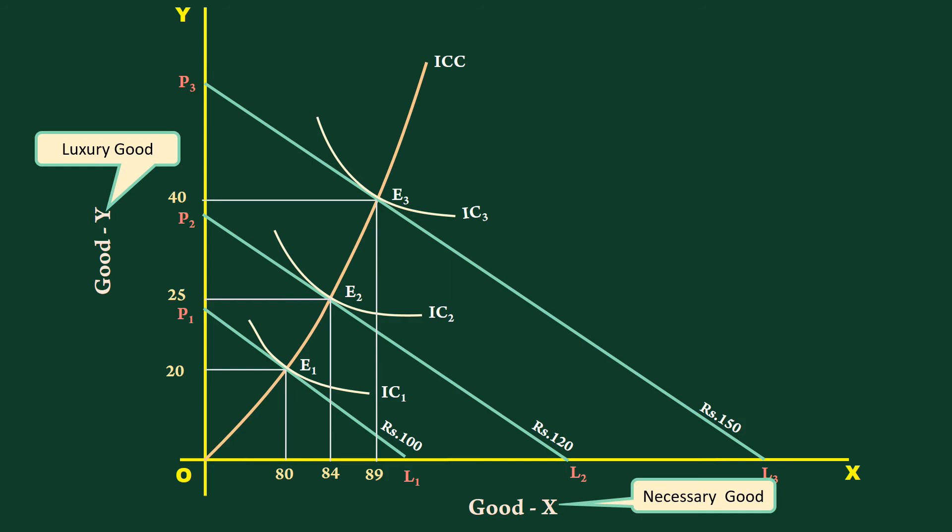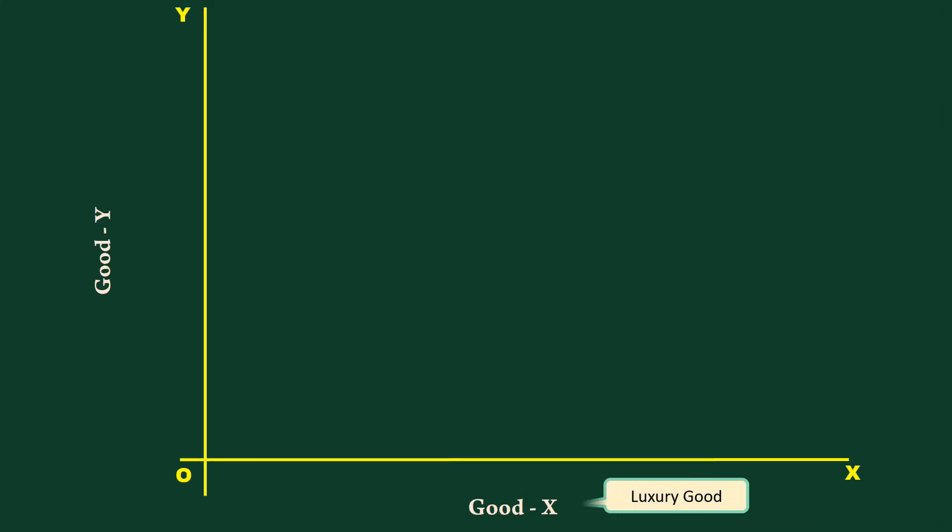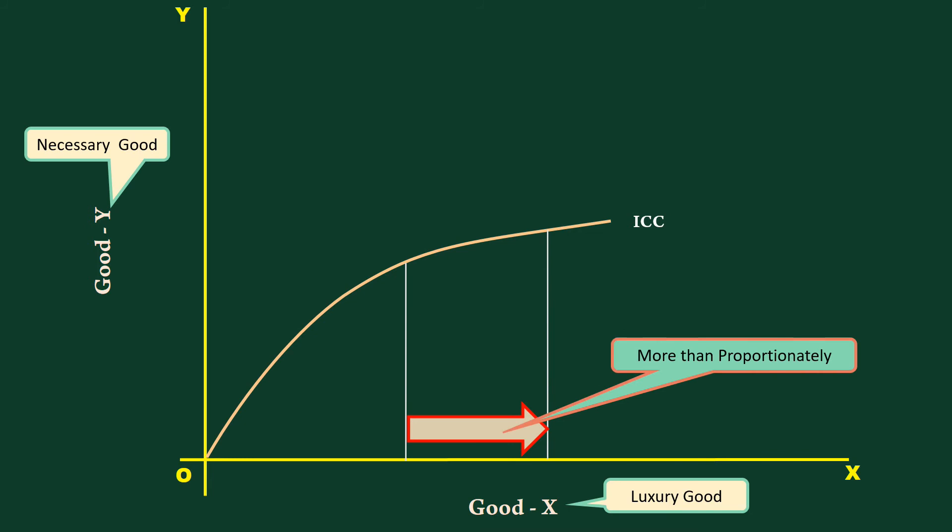Naturally, if good X is luxury and good Y is necessary, the income consumption curve will be concave downwards. Because consumers' purchase of good X will increase more than proportionately to a given proportionate increase in income.